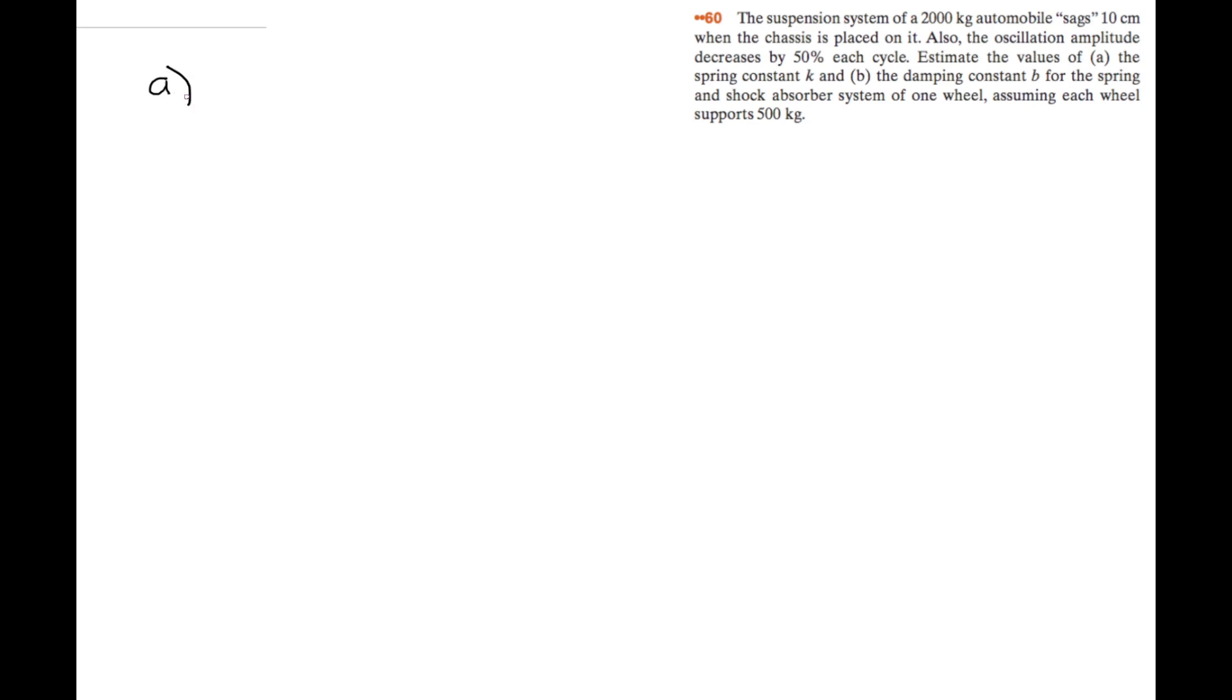Okay, so for A, it's asking for the spring constant K. We know that the force of the spring is equal to Kx. So we place 500 kg on one spring times gravity. We're finding the force of gravity on the 500 kg is equal to K times the delta x.